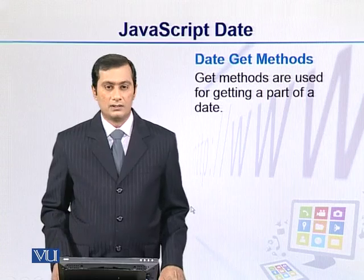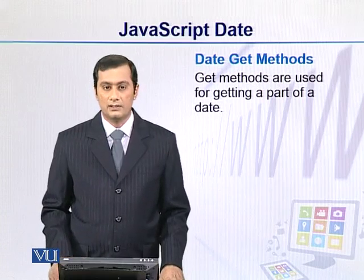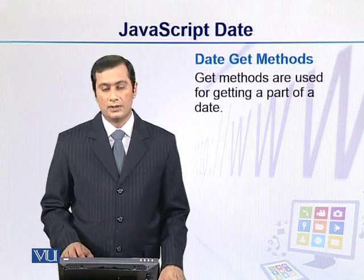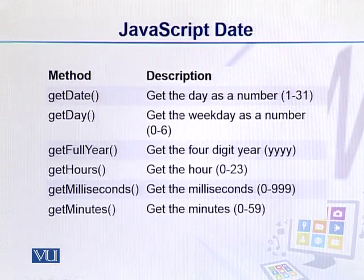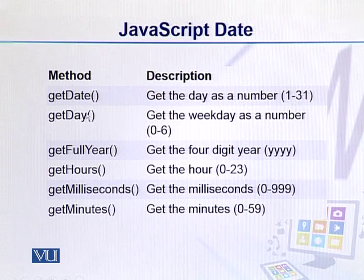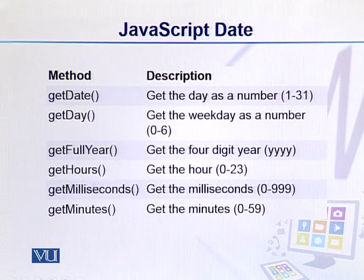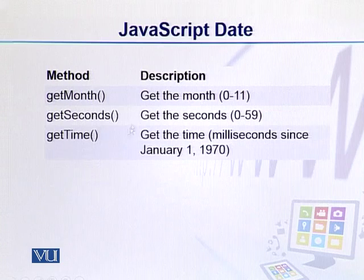We have different get and set methods for the date object. For the get methods, we can retrieve specific values. We can get a specific day as a number from 1 to 31. There is also getDay(), which returns the weekday from 0 to 6, where 0 represents Monday. We also have getFullYear(), getHours(), getMilliseconds(), getMinutes(), getDate(), getMonth(), getSeconds(), and getTime().